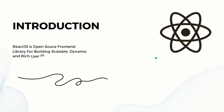What is React.js? React.js is an open source front-end library for building scalable, dynamic, and rich user interfaces. It is a declarative, efficient, and flexible JavaScript library for building reusable UI components. It is a component-based front-end library responsible for the view layer of an application. In the MVC pattern, the model and controller come from the back end, while React handles the view — everything visible to the user.